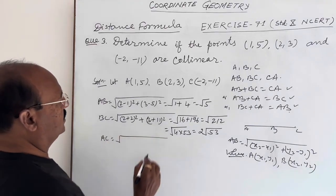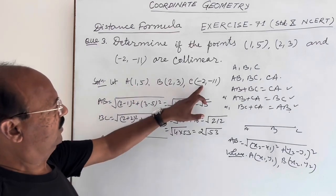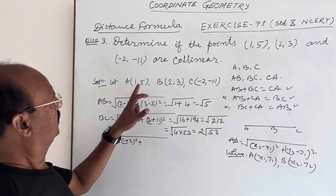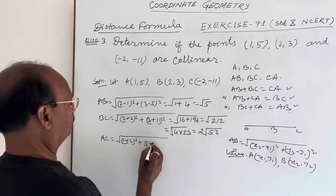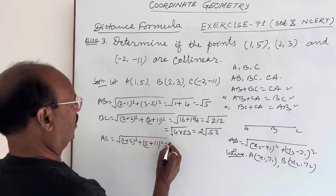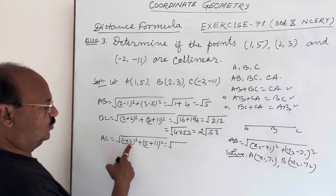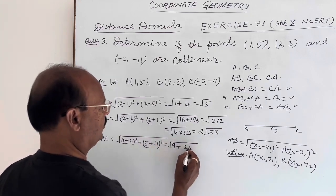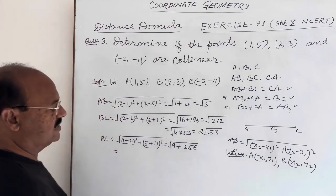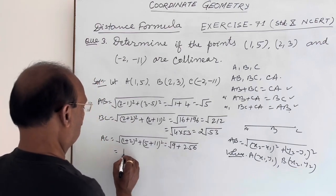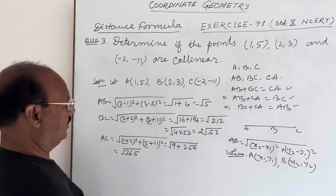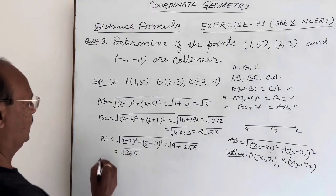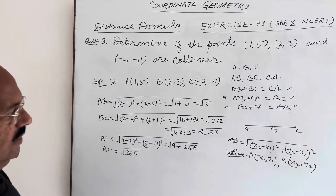Now let us find AC: AC = √[(1 − (−2))² + (5 − (−11))²] = √[(3)² + (16)²] = √[9 + 256] = √265. No factor is common here, so √265 is the length AC.